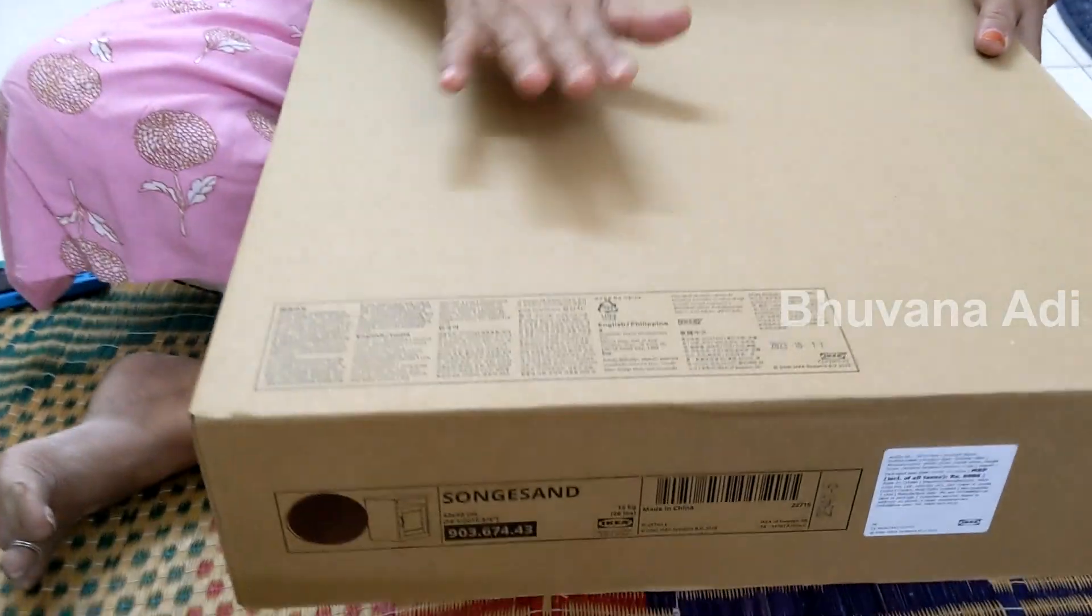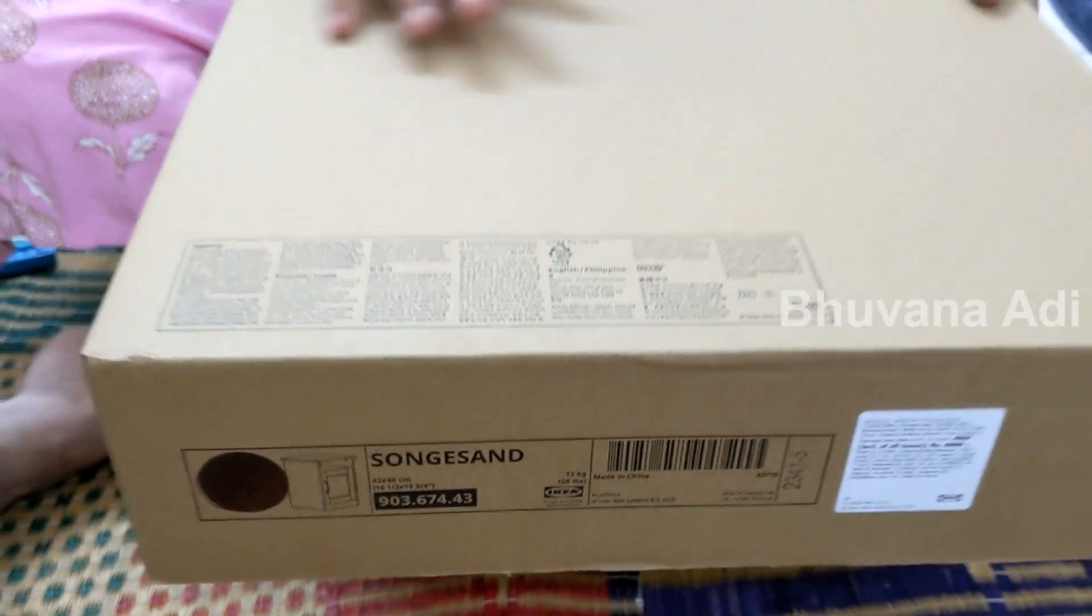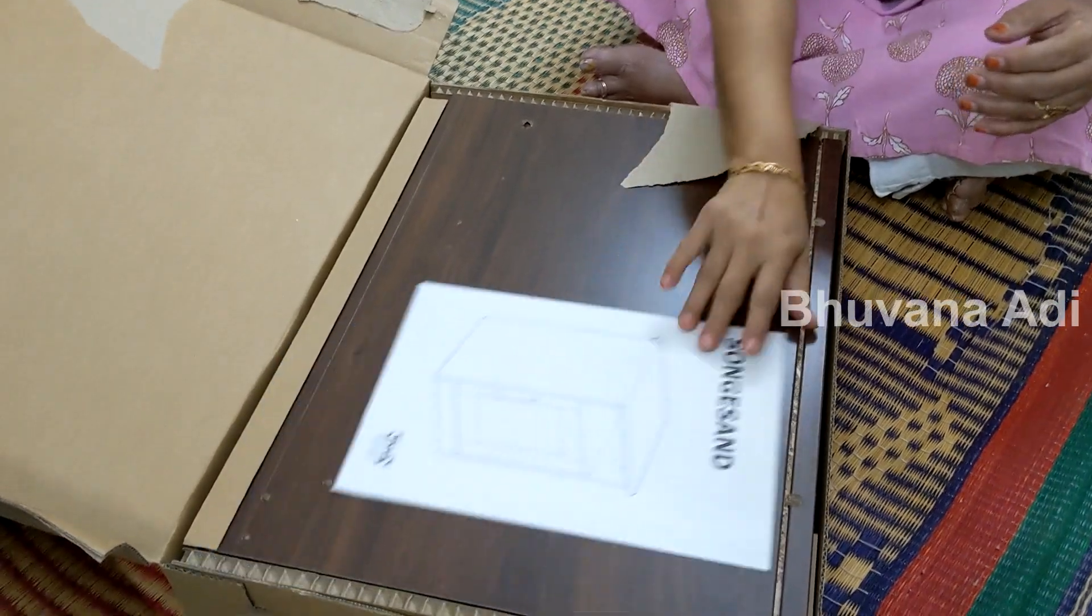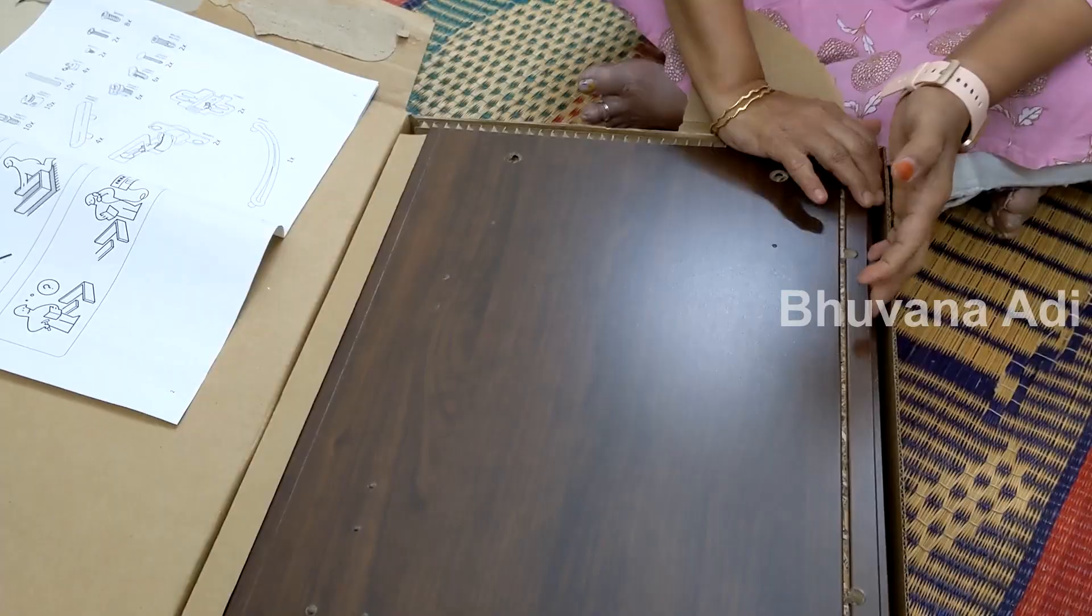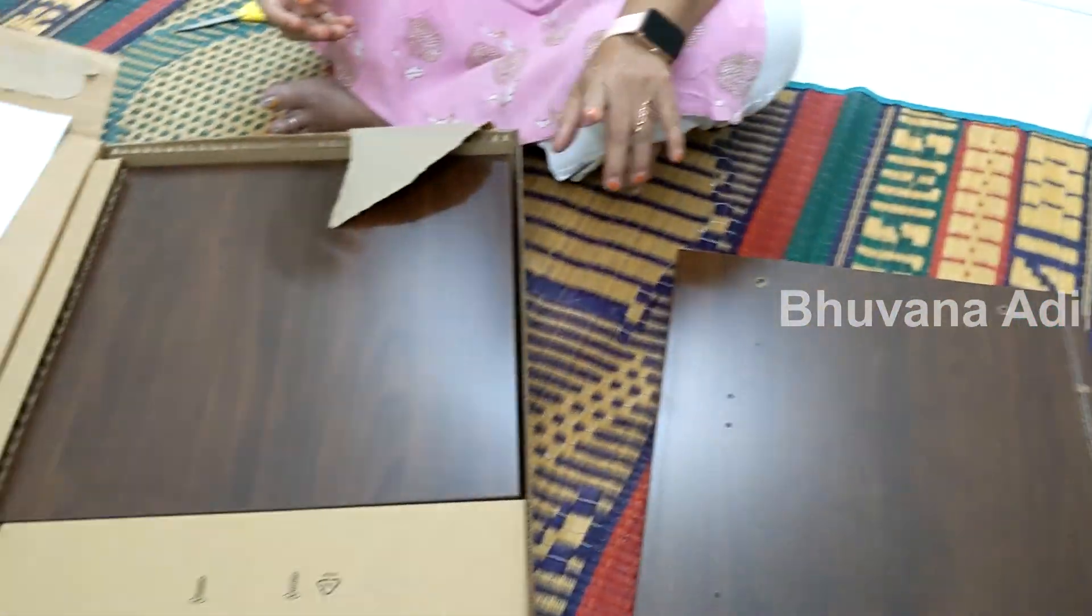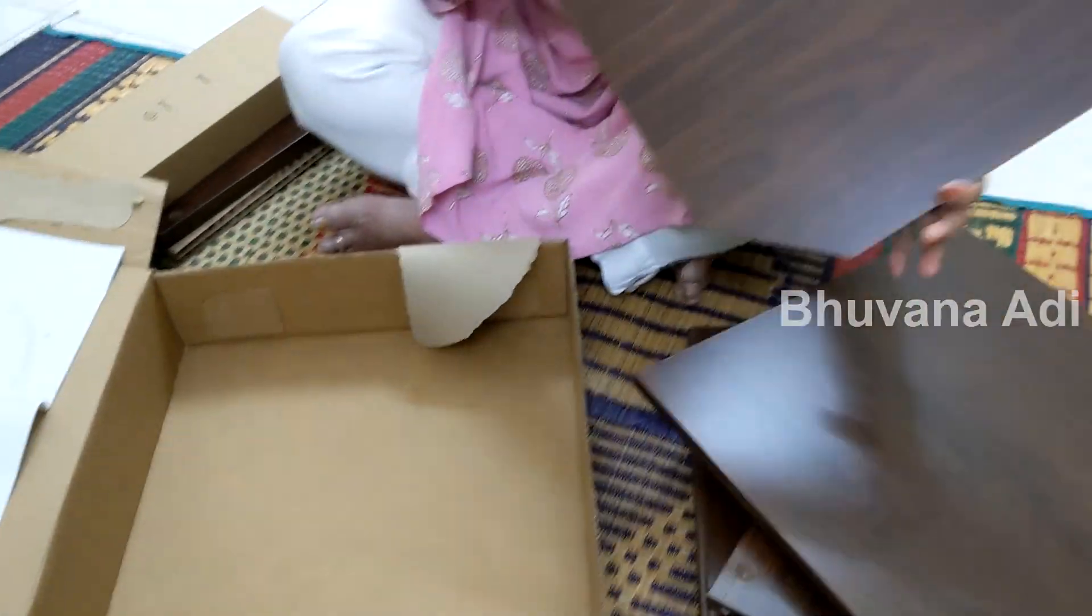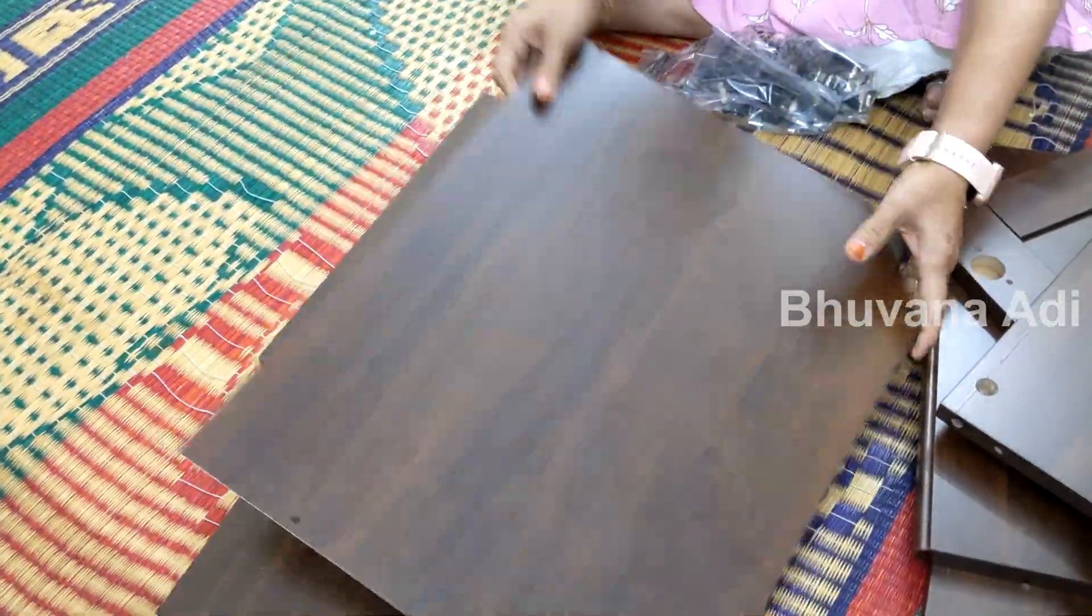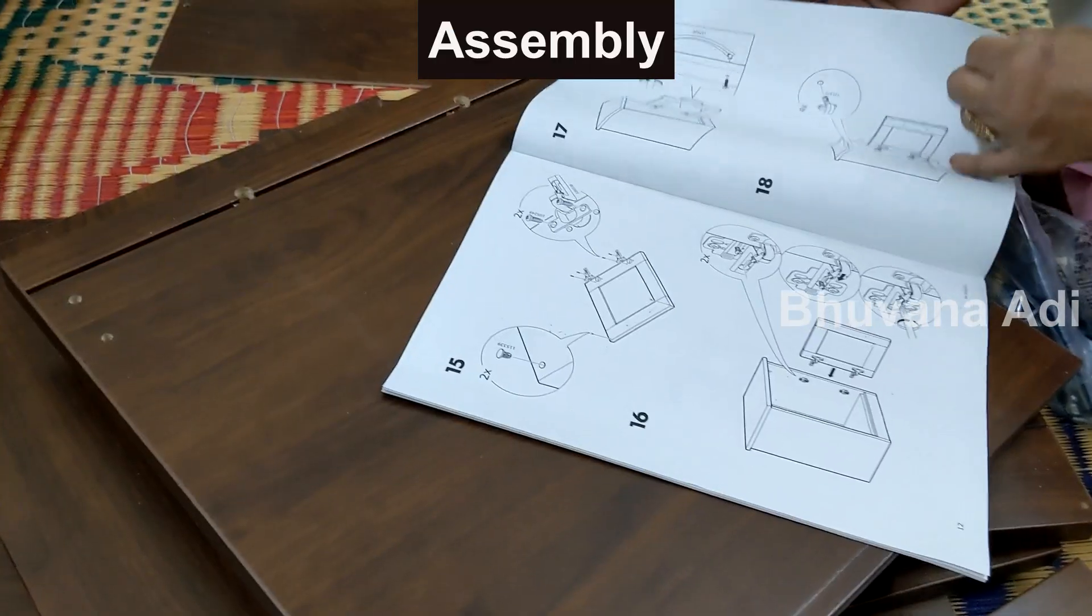So this box has the Songa Sand side table which I am going to unbox and assemble now. This is the side table Songa Sand. This is the procedure.